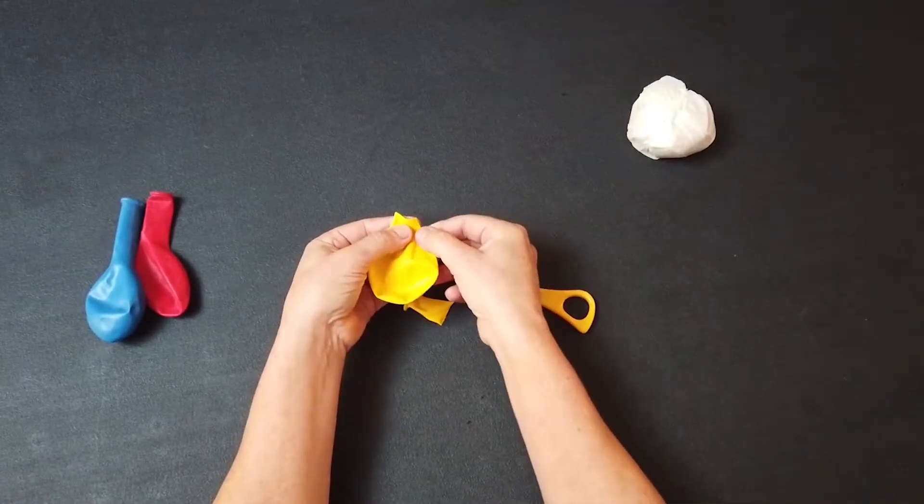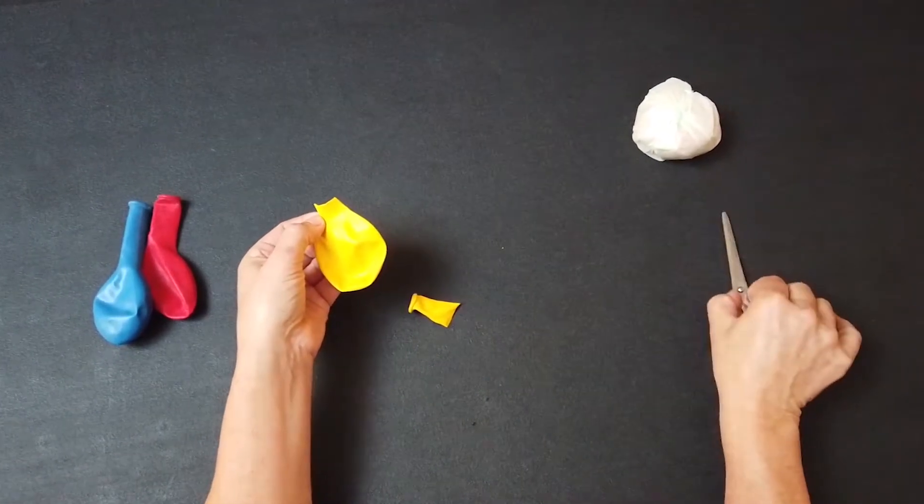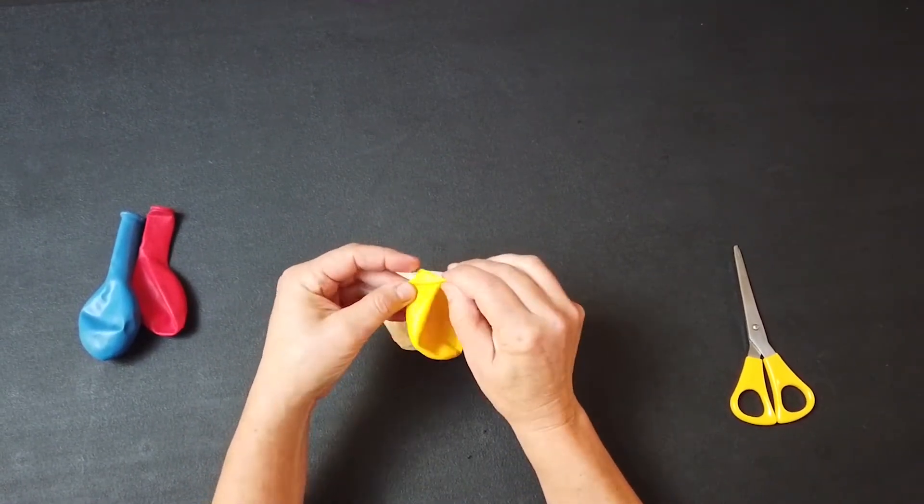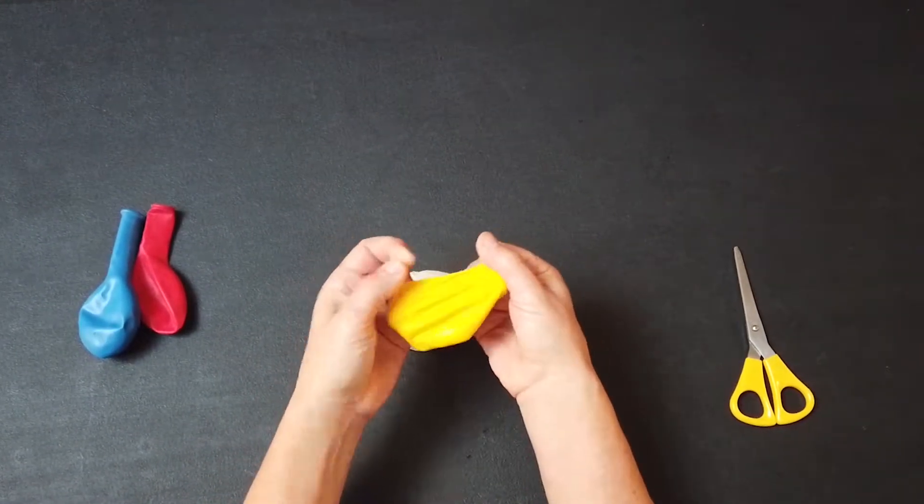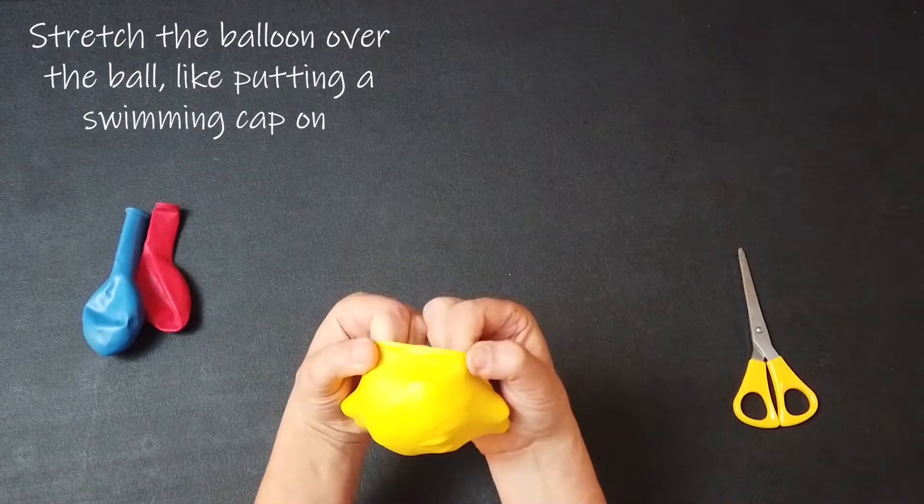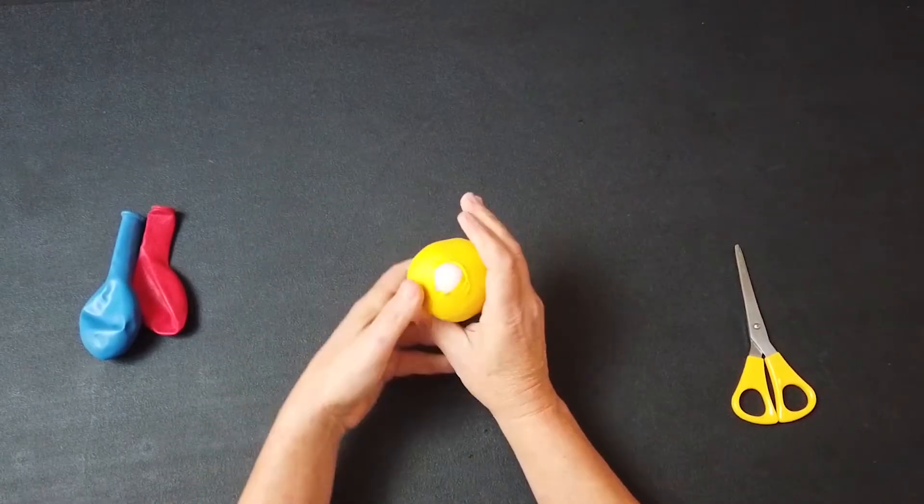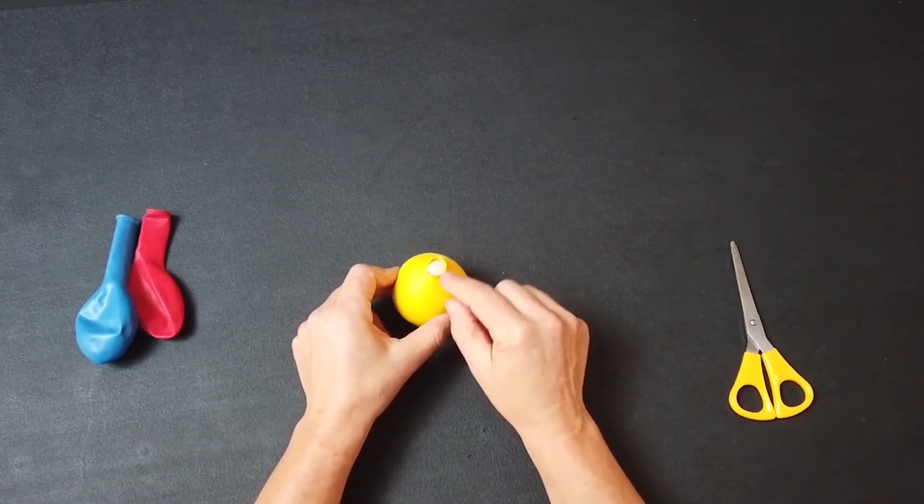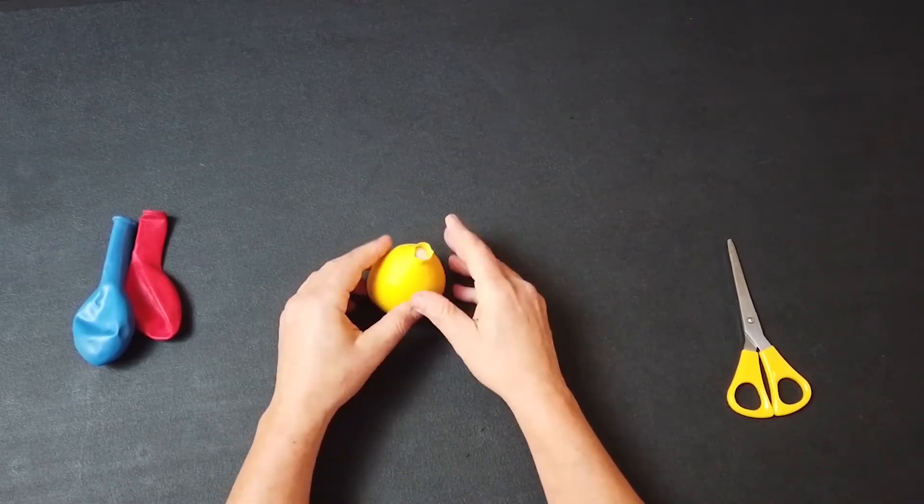But you're just going to leave a little bit of that neck bit sticking out. So you cut into the main body of the balloon. Then you're going to take your juggling ball and take your fingers inside the balloon. Put it on like a swim cap. So you're stretching it out nice and big and stretch it over the top of your juggling ball. And you can see that neck bit that we left, but that's good. It should be like that.